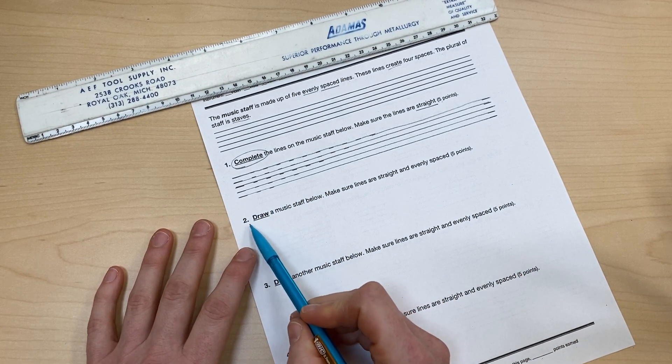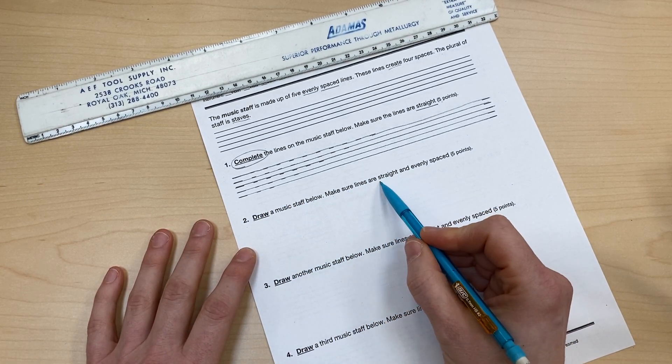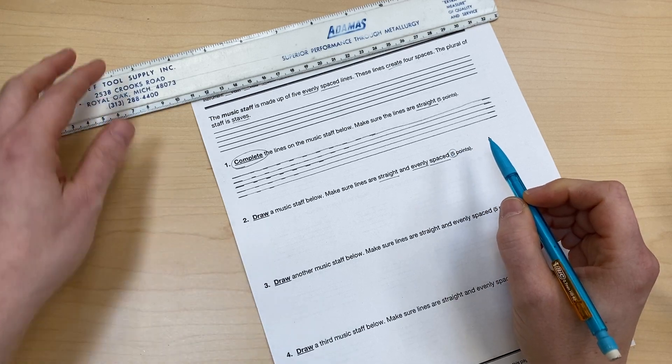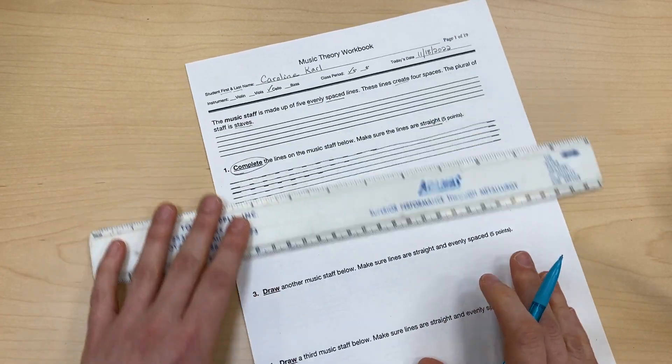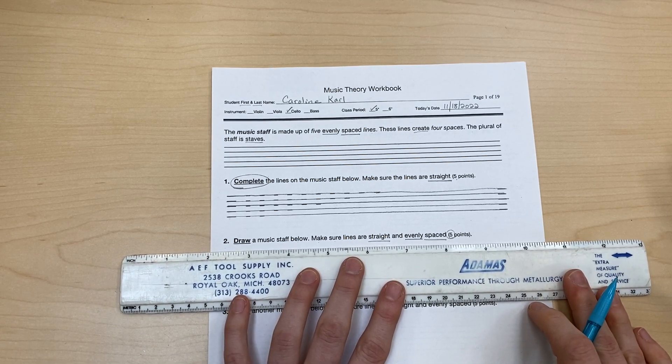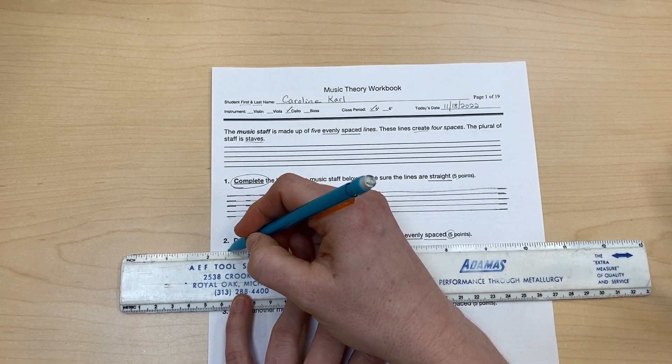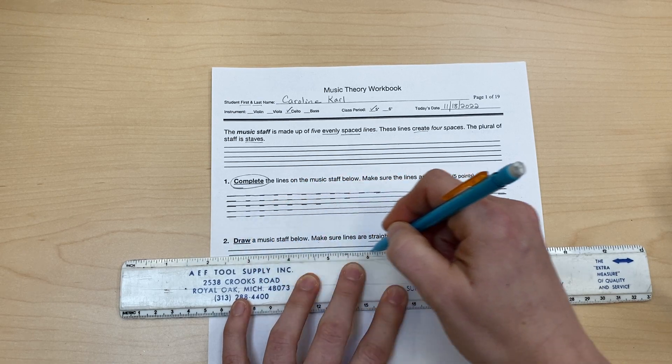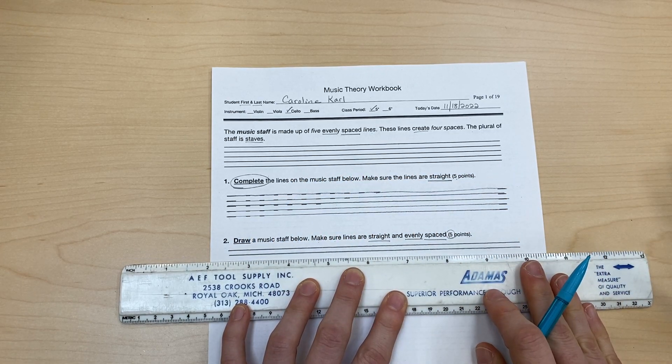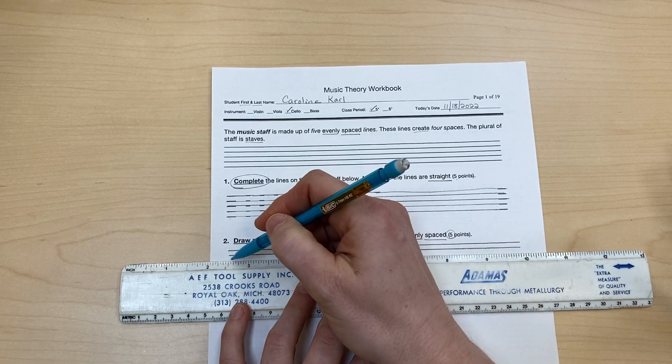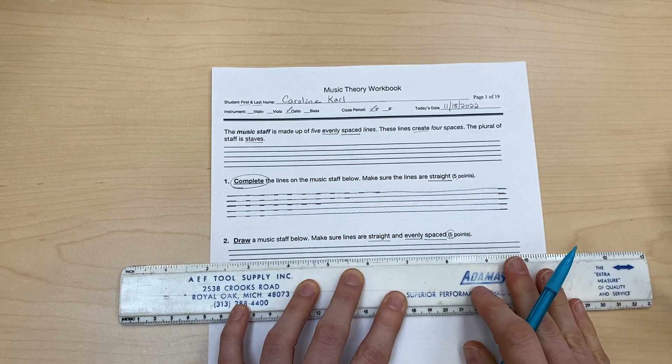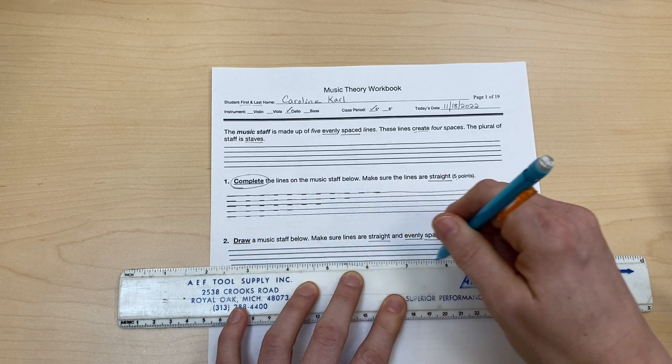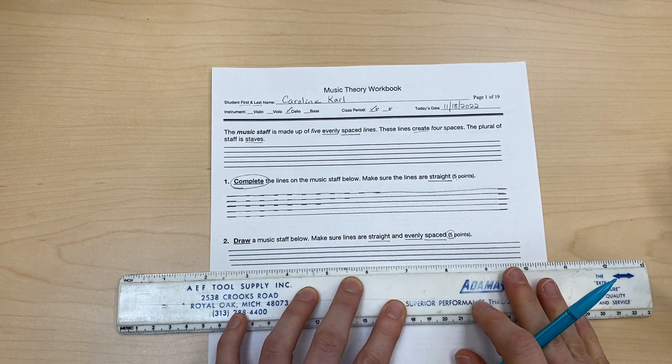Number two says: draw a music staff below. Make sure lines are straight and evenly spaced. And this is also worth five points. So I'm going to come over here, and this time I'm going to do differently. I'm going to go from the bottom, and I'm just going to draw music staff all the way across the paper. And then I'm going to move down a little ways and do another line. And then I'm going to move down a little ways again and do another line. That's three lines. This is going to be my fourth line.